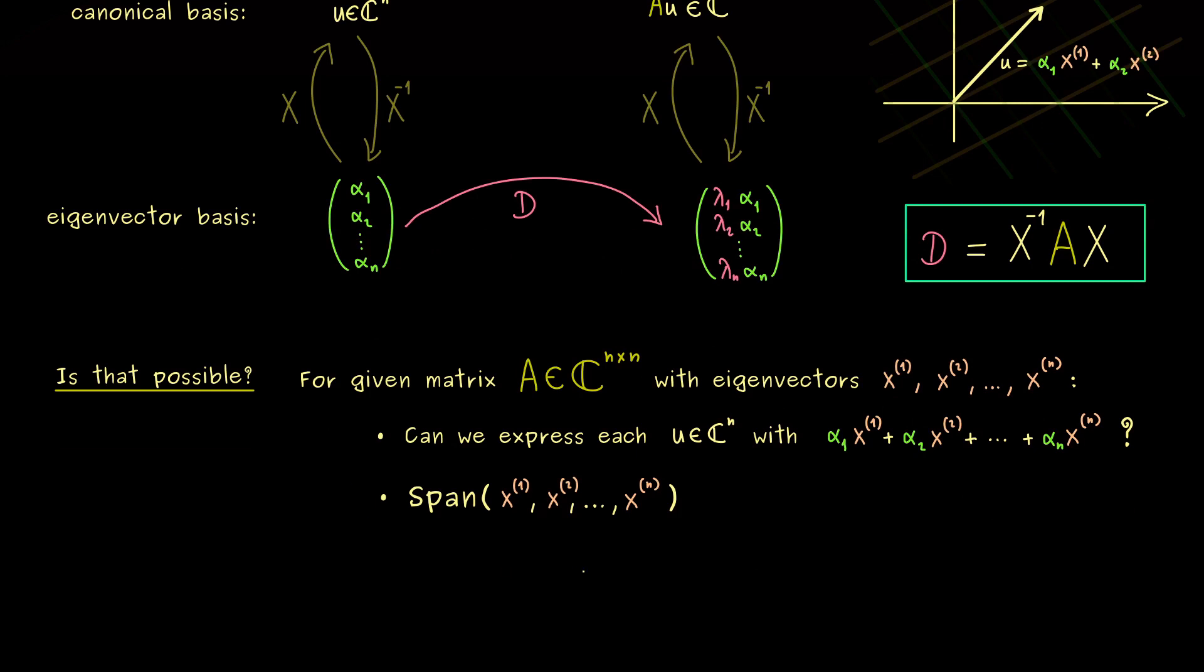So we see, this is now very simple, is the set given as the span of the vectors x1 to xn equal to C^n. And again, if we have that, the picture from above works.